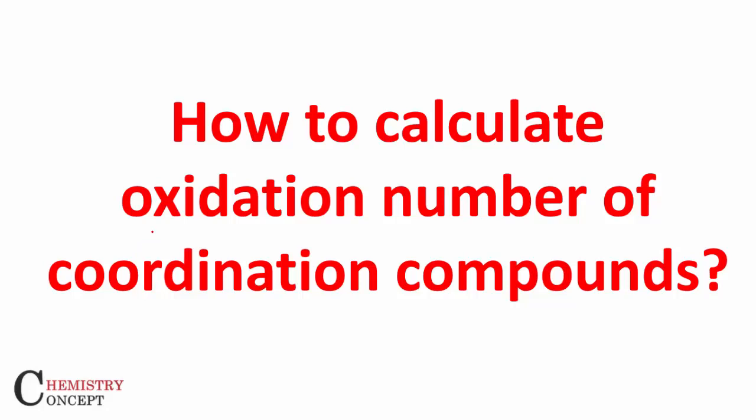Welcome students to Chemistry Concepts. Today we'll learn how to find the oxidation number of a metal in coordination compounds. It is necessary to calculate the oxidation number accurately because there are many exam questions requiring it — for IUPAC naming, you must mention the oxidation number of the metal; for VBT or CFT, you need it to find the number of electrons. Most students make errors here.